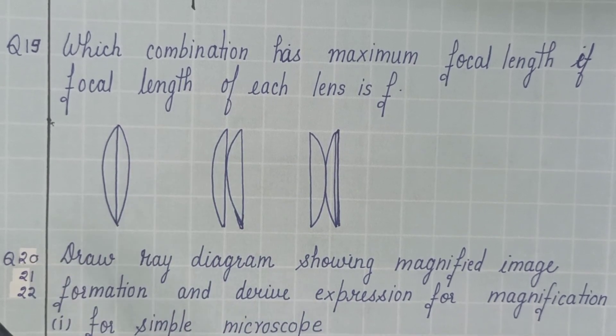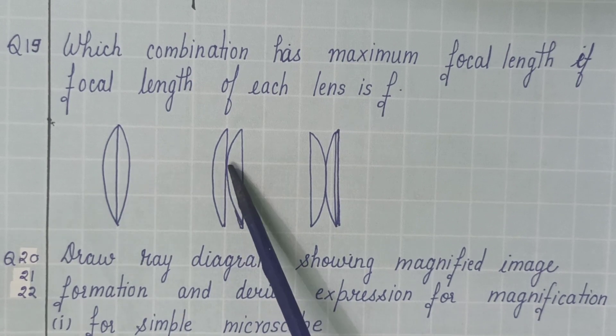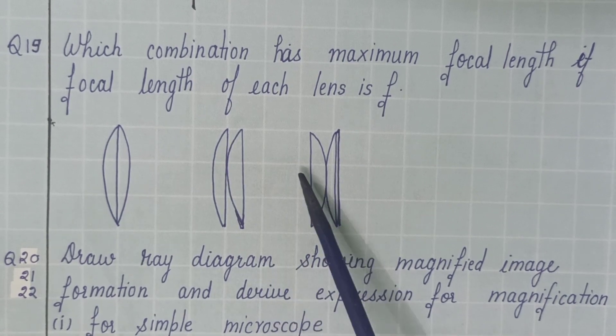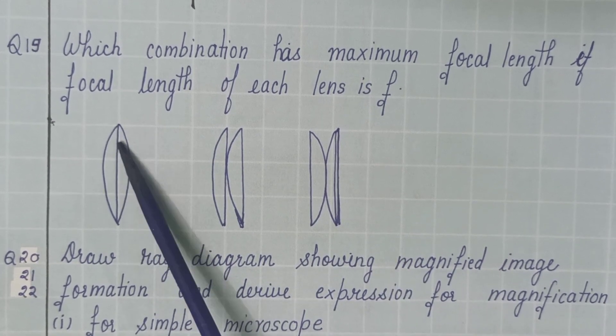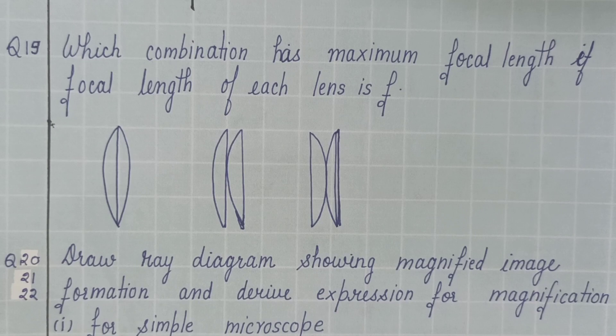Then which combination has maximum focal length in these three cases? Where each lens or each half of the lens is having focal length f. In this case, the two lenses are used in this orientation. The third case, in this orientation. In this first case, their plane side is in contact.